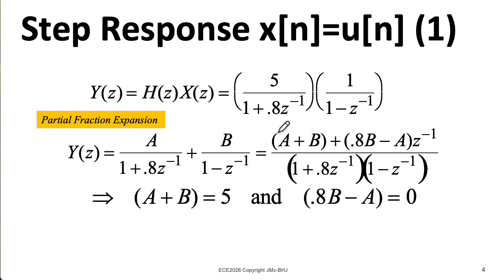So if I take the resulting numerator and group the constant terms, I get a plus b. And then if I group the terms that are coefficients of Z to the minus 1, I wind up with 0.8 b minus a. So we can write two equations. We can write a plus b equals the constant term of my original numerator, which is 5. And then I can write 0.8 b minus a equals the coefficient of the Z to the minus 1 term in my original numerator. But there is no Z to the minus 1 term, so I write equal 0.